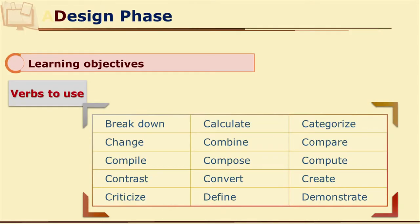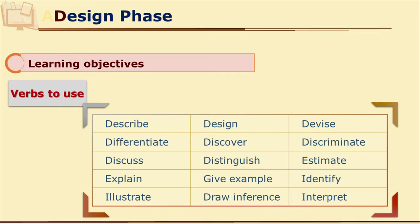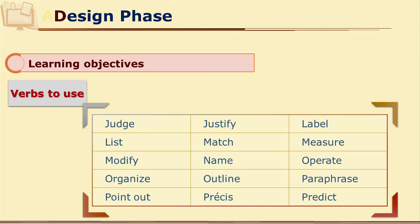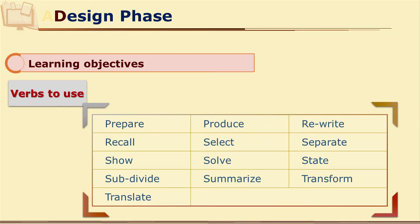Here is a list of verbs you can use while writing performance objectives: breakdown, calculate, categorize, change, combine, compare, compile, compose, compute, contrast, convert, create, criticize, define, demonstrate, describe, design, devise, differentiate, discover, discriminate, discuss, distinguish, estimate, explain, give example, identify, illustrate, draw inference, interpret, judge, justify, label, list, match, modify, name, operate, organize, outline, paraphrase, point out, predict, prepare, produce, rewrite, recall, select, separate, show, solve, state, subdivide, summarize, transform, translate. Here is a huge long list for you to use when writing performance objectives.